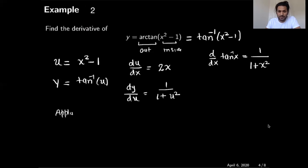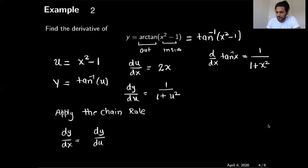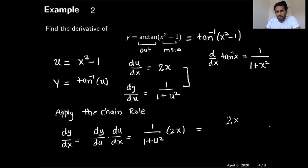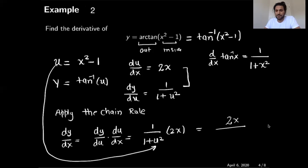Similarly, as in the last example, applying the chain rule gives dy/dx as the product of the derivative of y with respect to u times u with respect to x. This will be 1 over 1 plus u squared times 2x. Since I want my answer in x, I plug u back in: the final answer is 2x over 1 plus (x squared minus 1) squared.